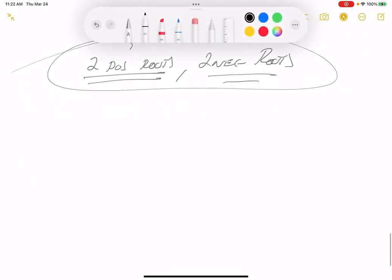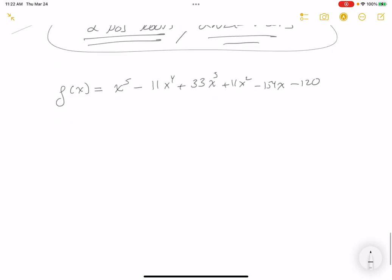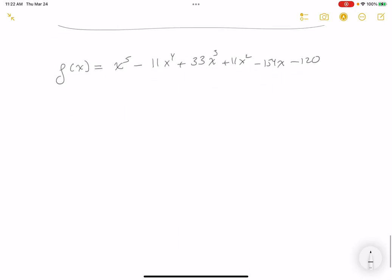And the whiteboard, give me one second. I'll write this down. f(x) equals x^5 - 11x^4 + 33x^3 + 11x^2 - 154x - 120. Okay, looking at this thing, it's a fifth-degree polynomial.